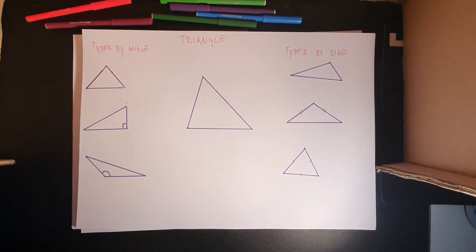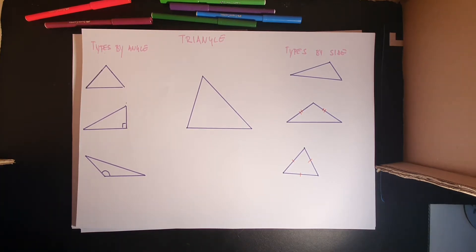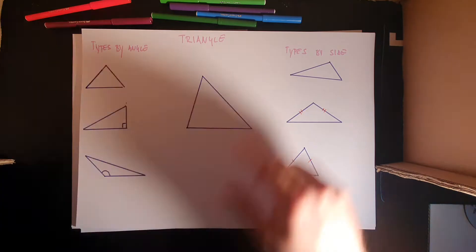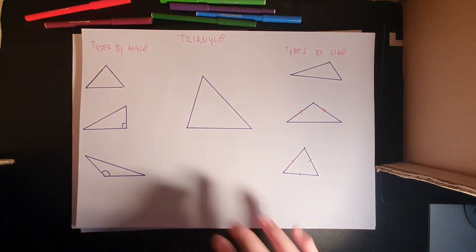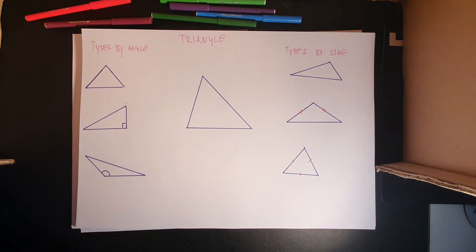Good morning everyone. In today's lesson we're going to continue on with geometry, specifically about the shape called triangle. Triangle is nothing new — you've done it multiple times in your primary school years. We'll go through the naming of types one more time, how we name specific parts in English, and some formulas that are applicable for all triangles going forward.